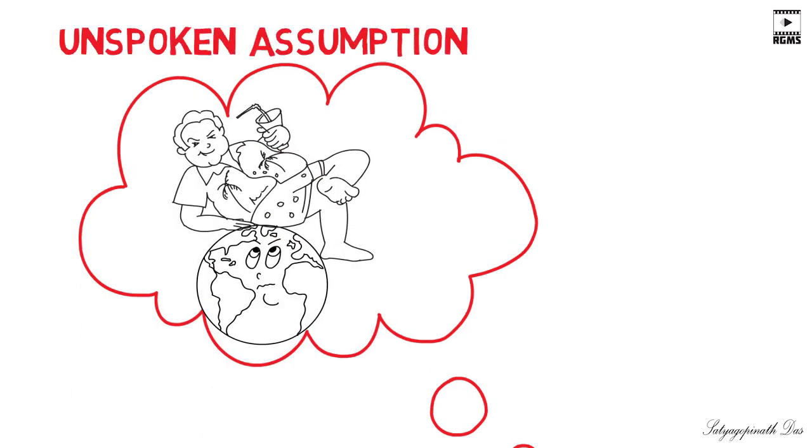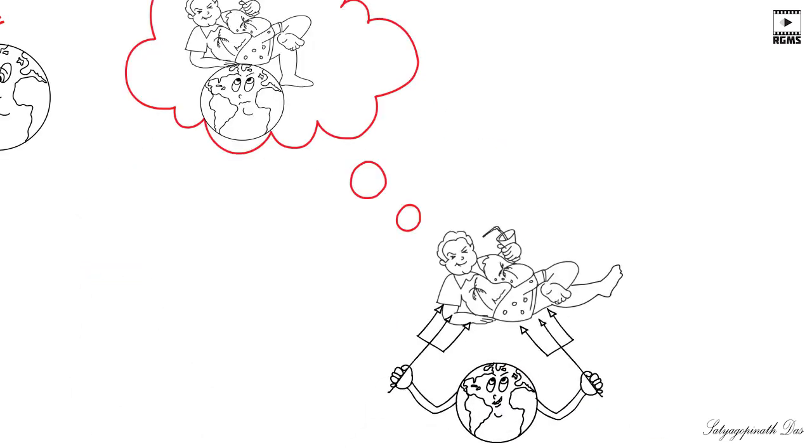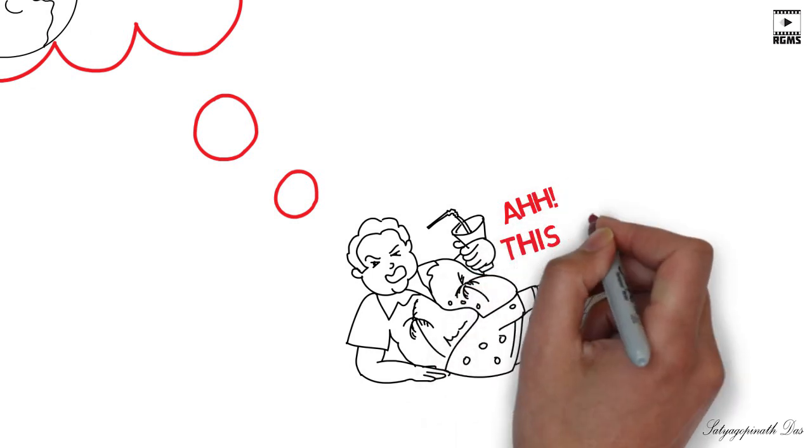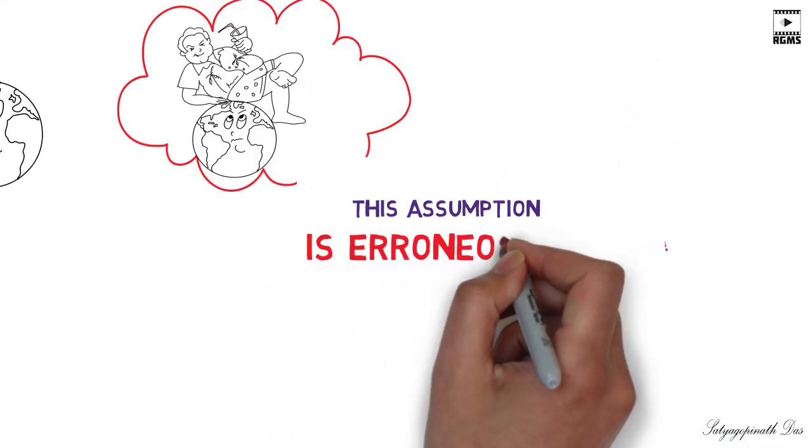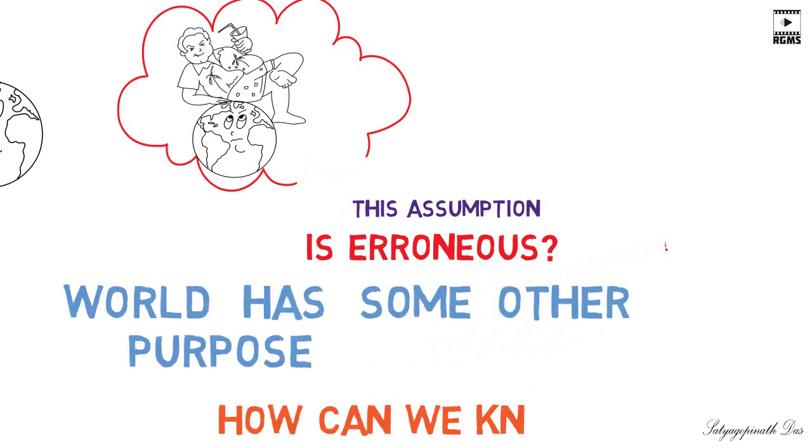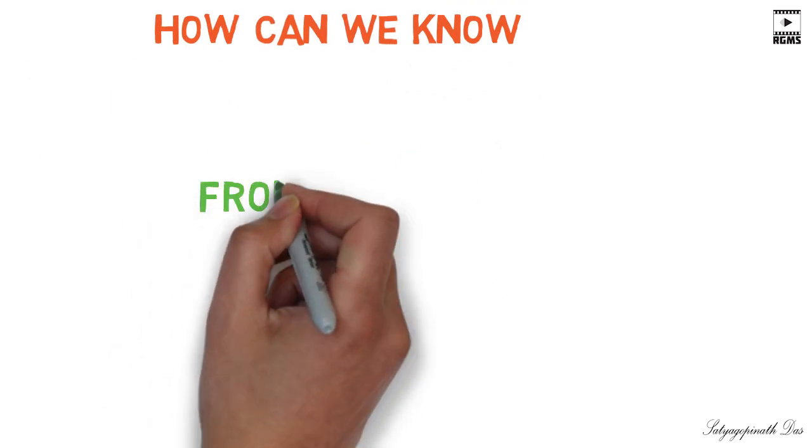This often unspoken assumption makes us feel justified in criticizing its design and the designer. But could it be that this assumption is erroneous, that the world has some other purpose? How can we know that purpose? From God, who is the designer of this world.